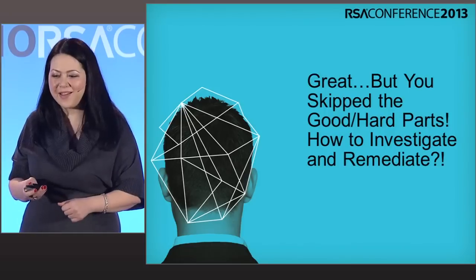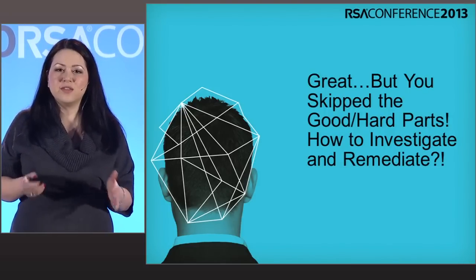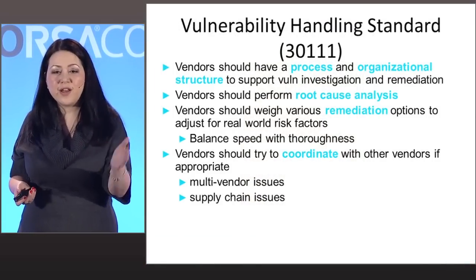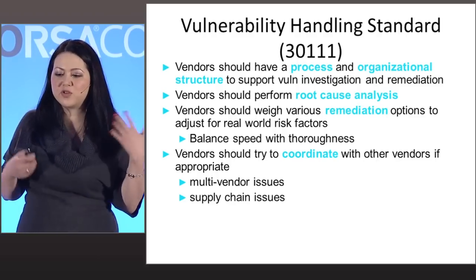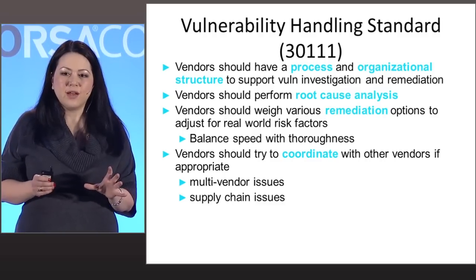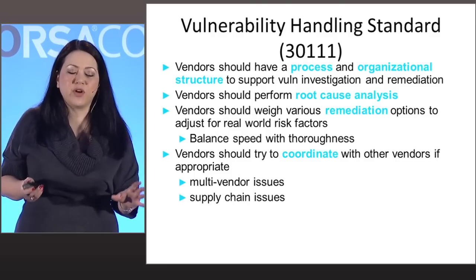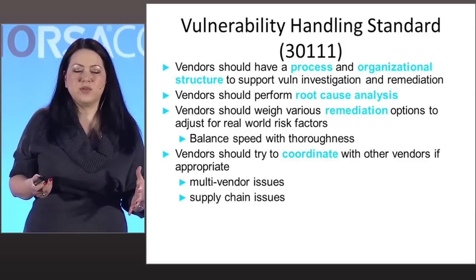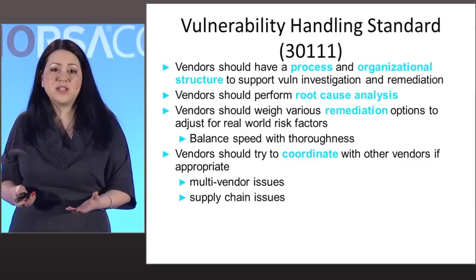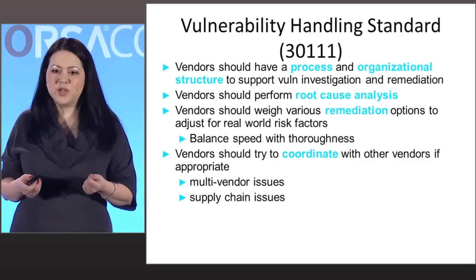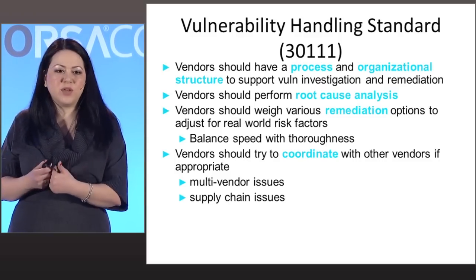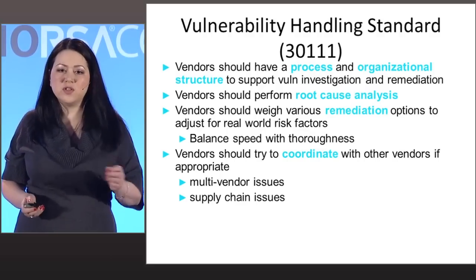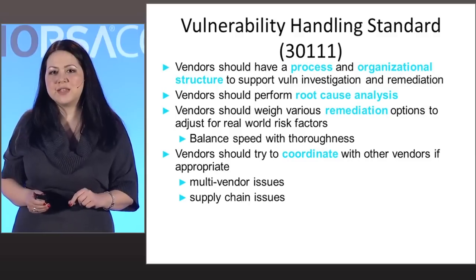Now we're going back into it — how do you investigate and remediate these issues? These are all the internal processes, so don't panic. Vendors should have some kind of process — really an extension of a general bug remediation and prioritization process. You need an organizational structure that supports specific types of vulnerability resolution, which may occur on very dynamic timelines, balancing a bunch of risk factors, and won't necessarily fit into your regular product development cycle, even if you're an Agile house.